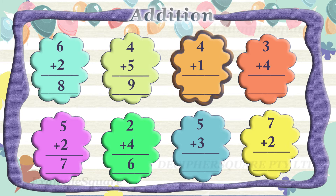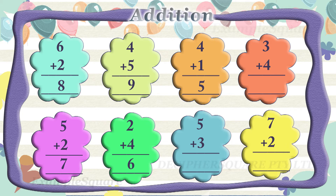What is four plus one? Four plus one equals five. What is five plus three? Five plus three equals eight.